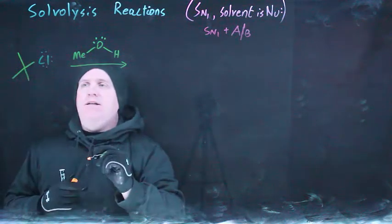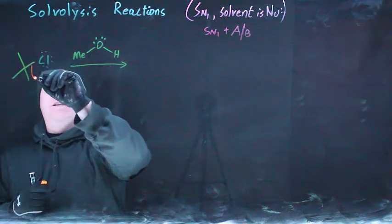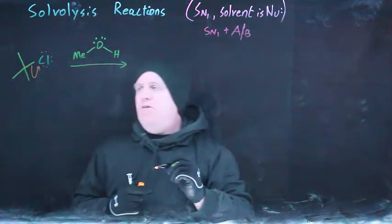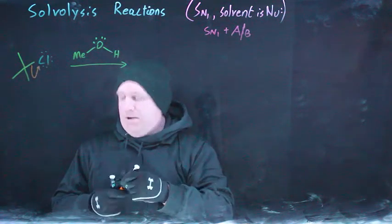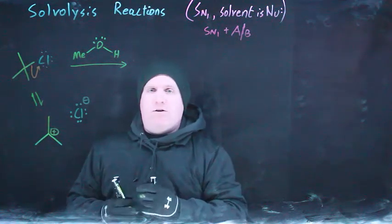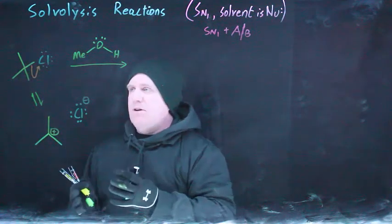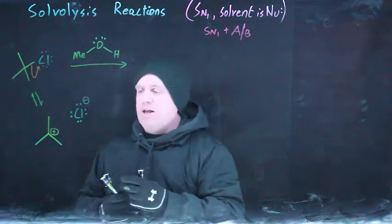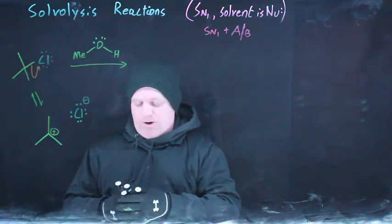What we have here is a tertiary leaving group situation where that pair of electrons can just become a lone pair on the chlorine. The result of that first arrow is to generate a chloride that now has a minus charge on it, because it now has four lone pairs, whereas before it had three.